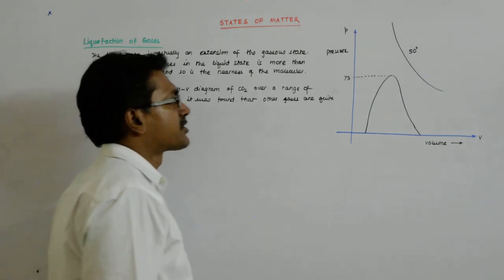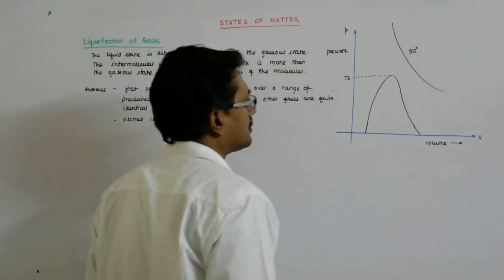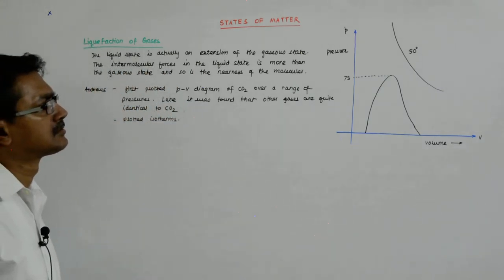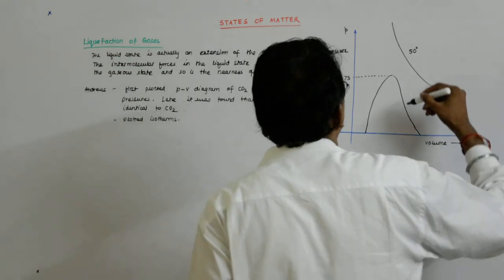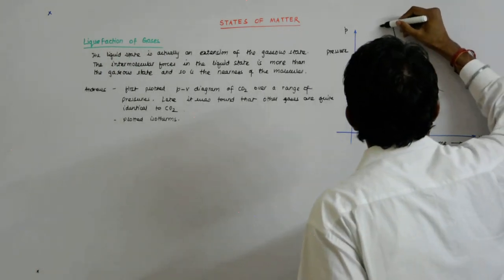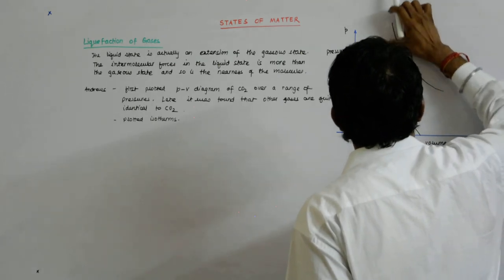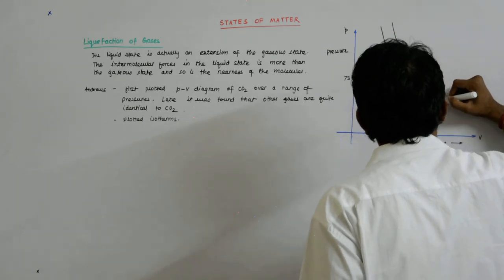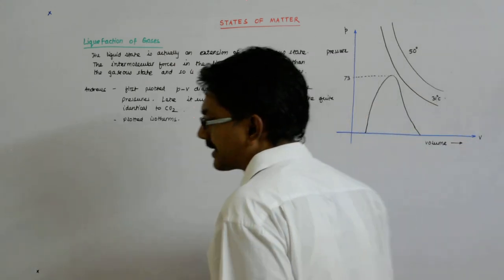He reduced the temperatures and kept on getting the isotherms till he came to 31 degree centigrade. It is still a gas.